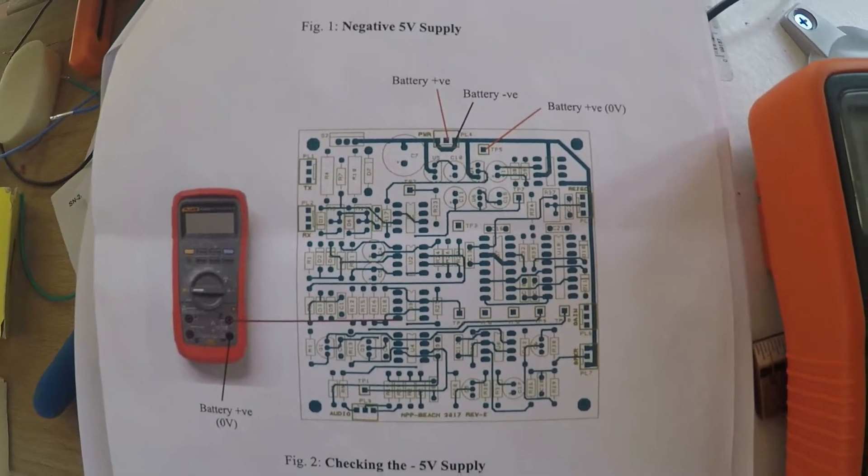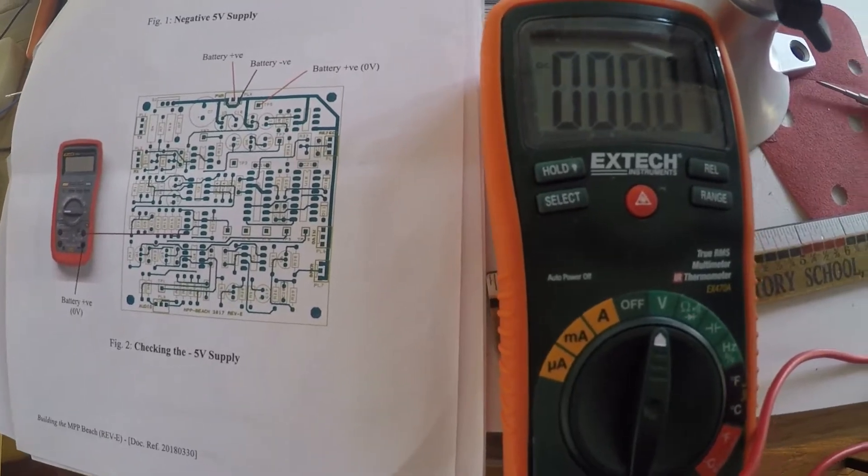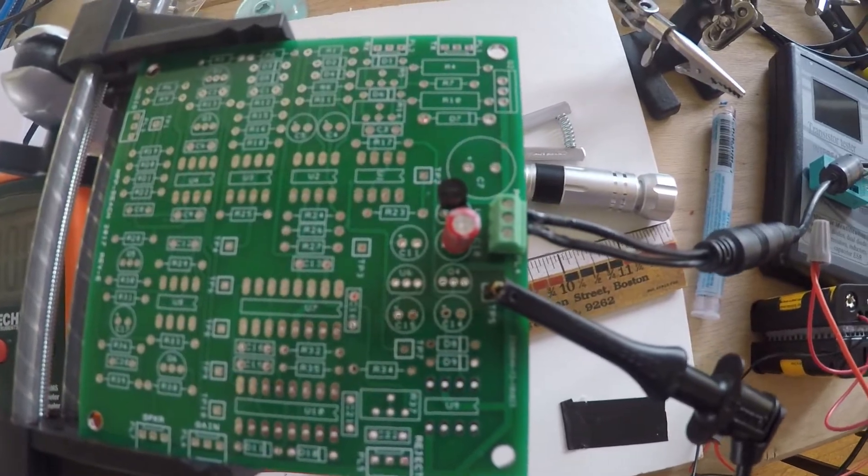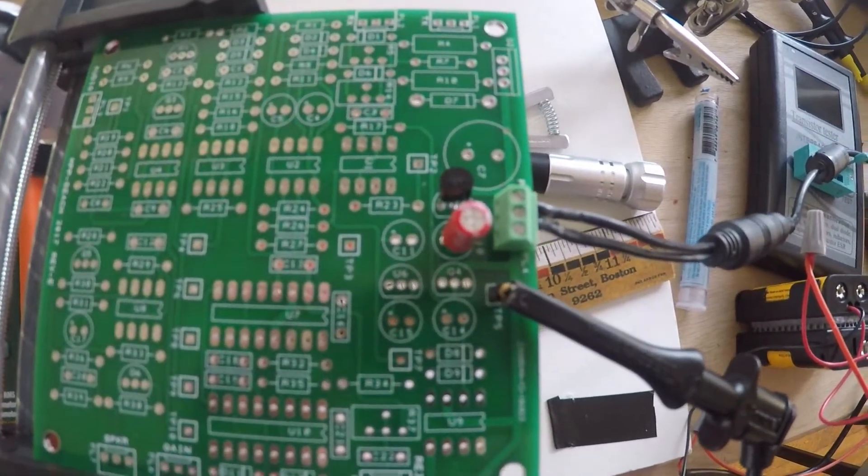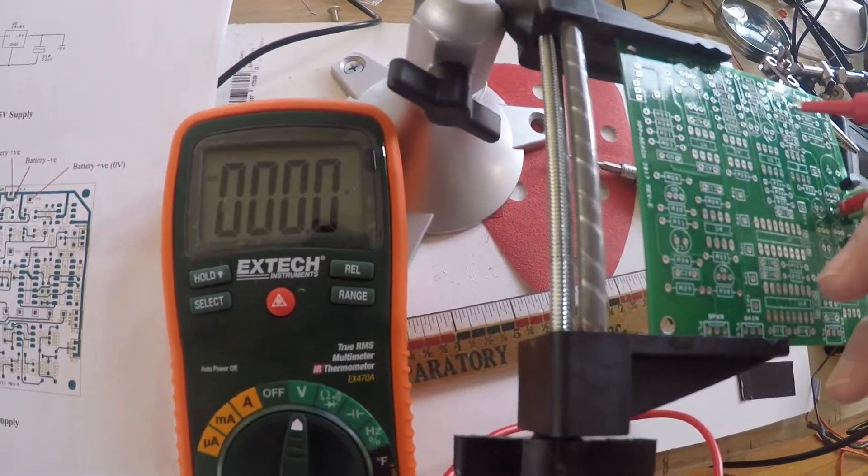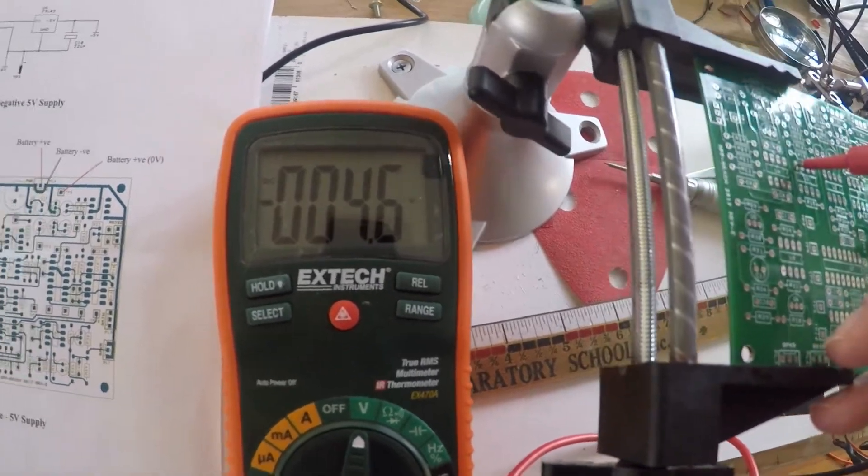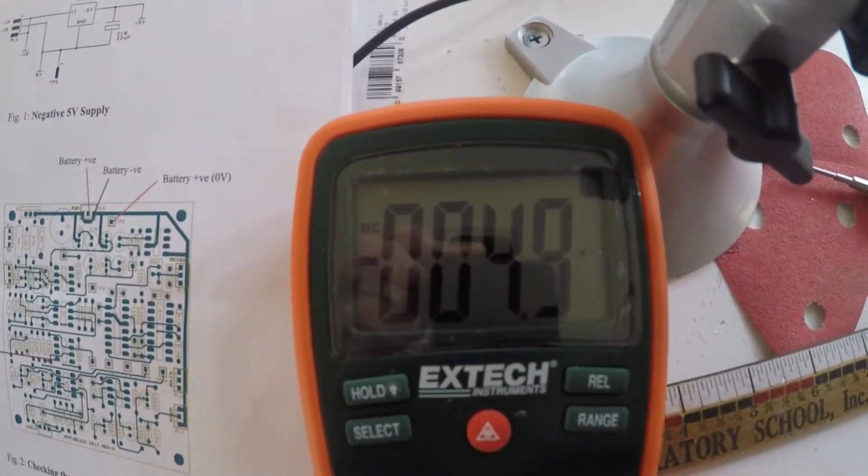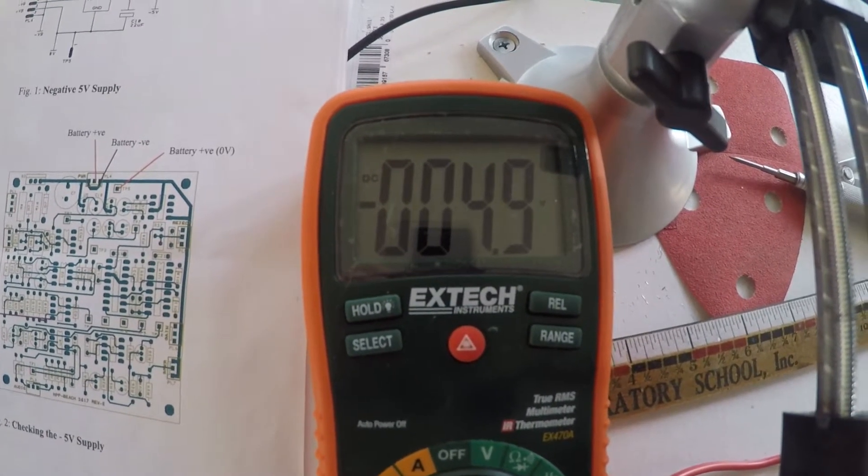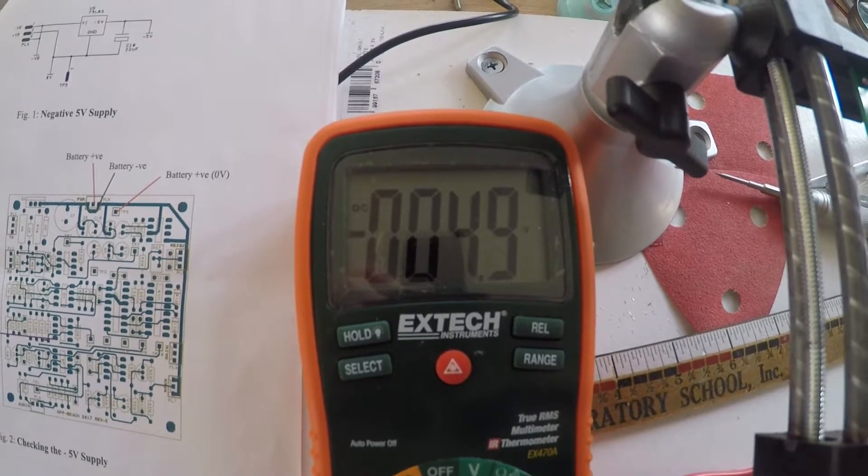Step one was the 5 volt negative power supply. Here's the components that the board is populated with. And we go to pin 4 of U3 and hopefully you can see we've got minus 4.9 volts.